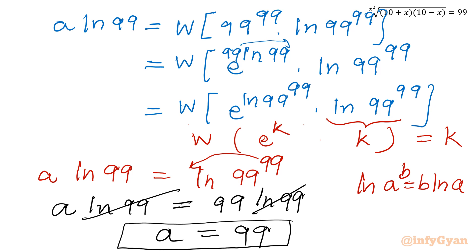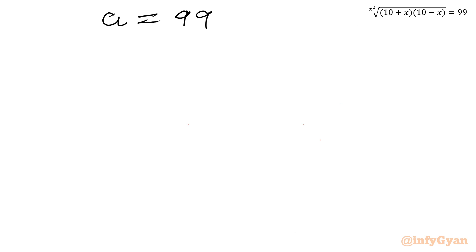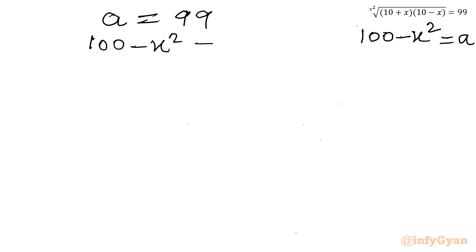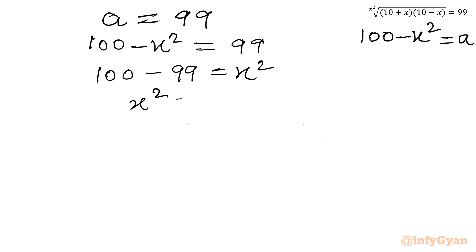Let us put this value back into our substitution. a equals 99, and our substitution was 100 minus x squared equals a. So I write 100 minus x squared equals 99, which gives x squared equals 1. After taking the square root of both sides, my answer is x equals plus or minus 1.